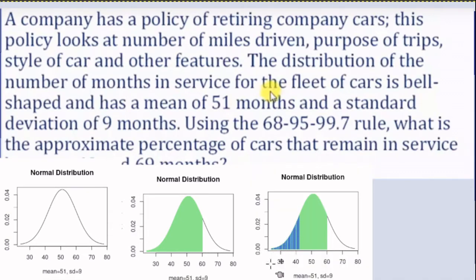This blue area represents the area below one standard deviation below the mean. If the mean is 51 and the standard deviation is 9, then one standard deviation below the mean is 42. So the area below 42 is that blue area. If we took the green area and subtracted the blue area, then we'd know the area within one standard deviation of the mean.